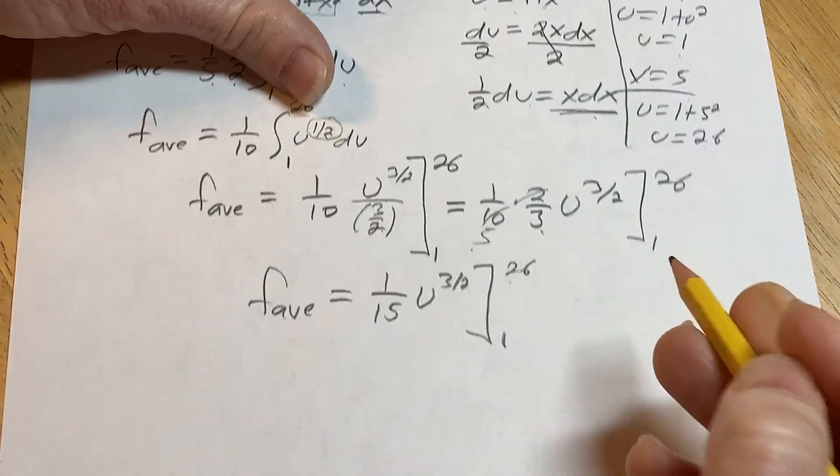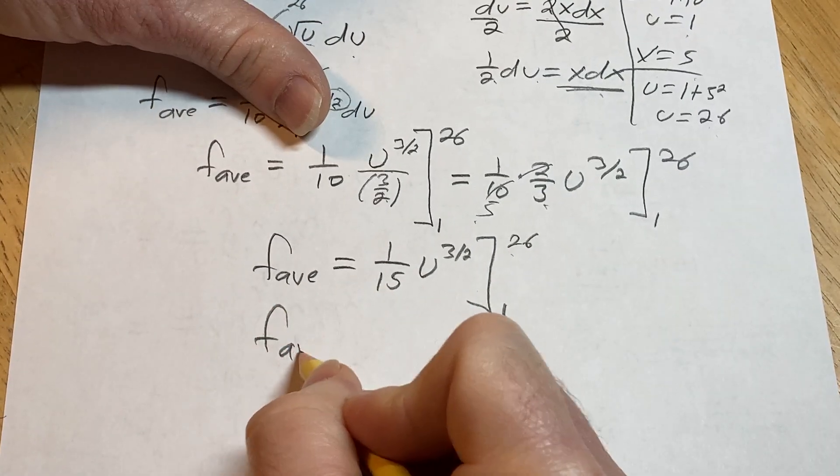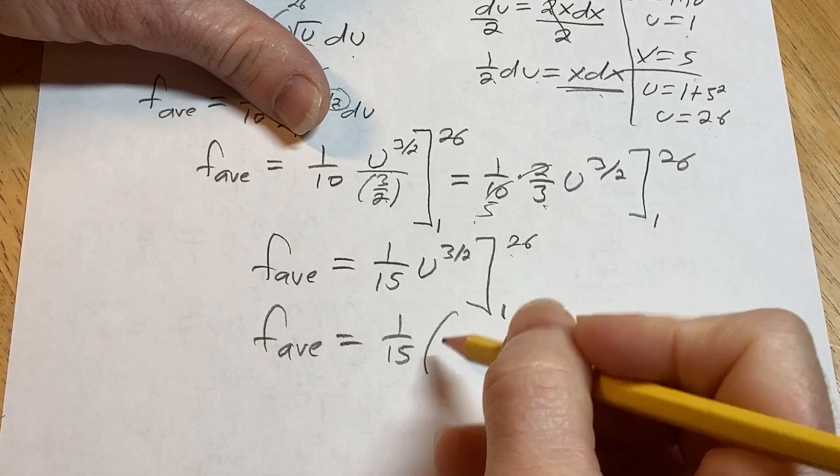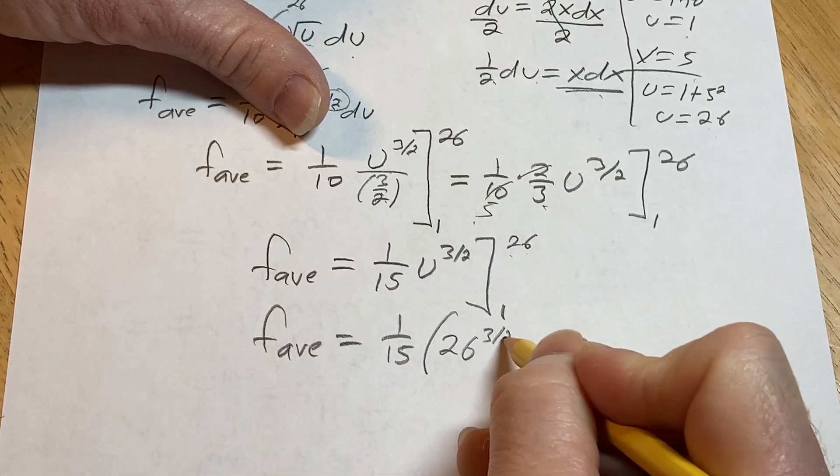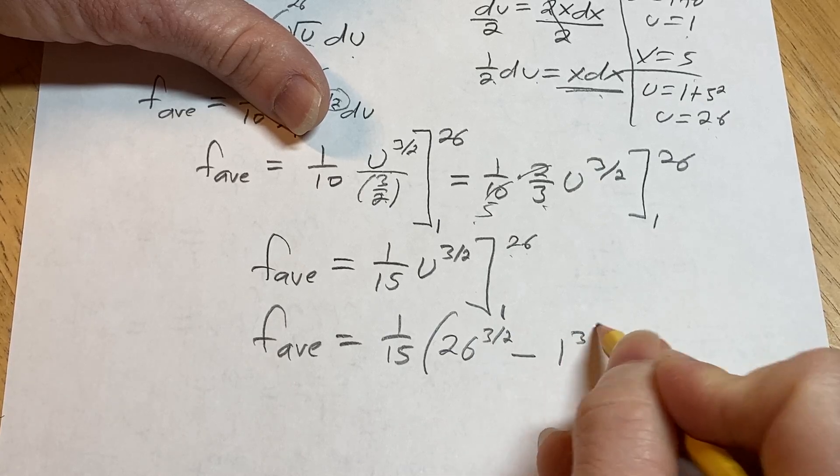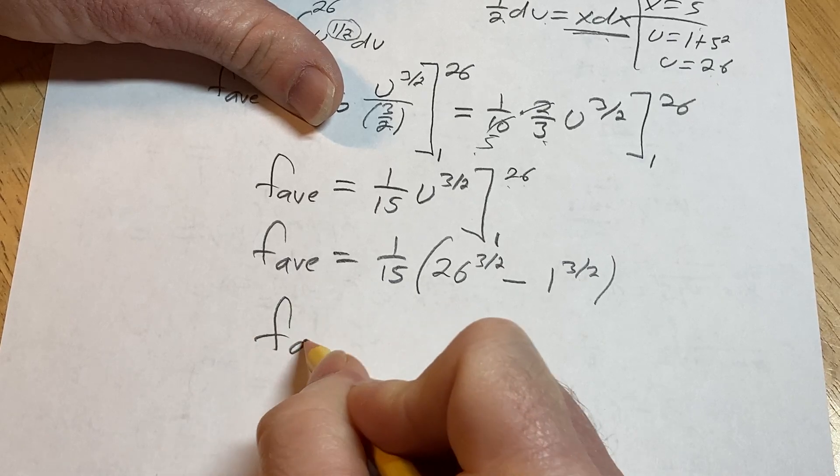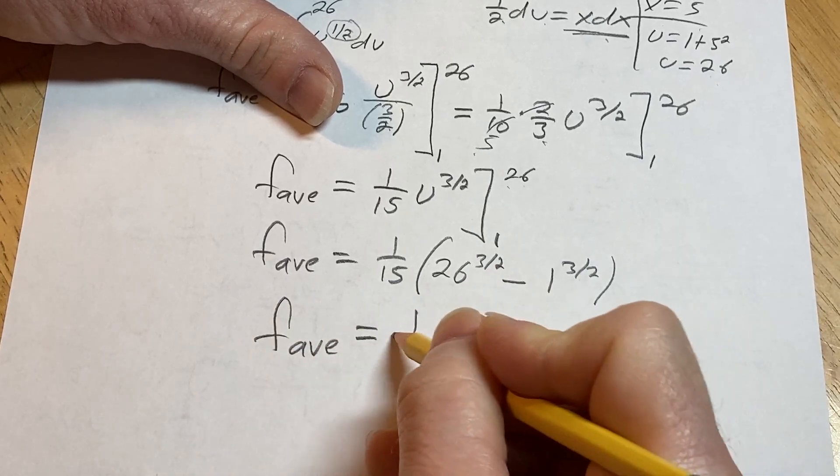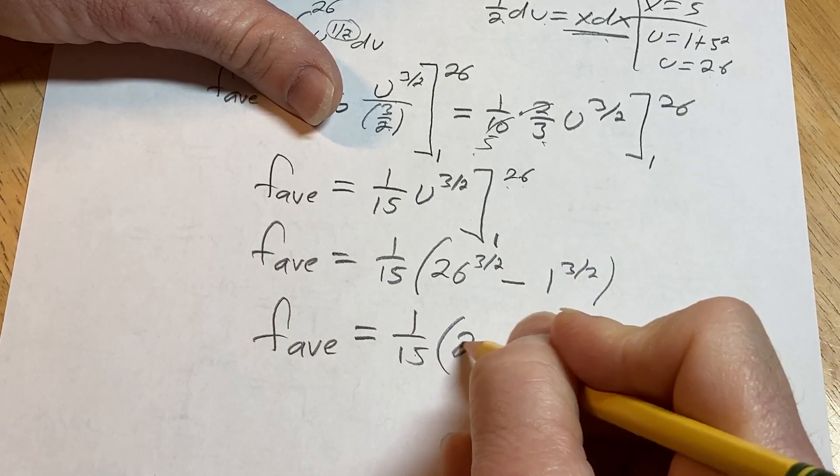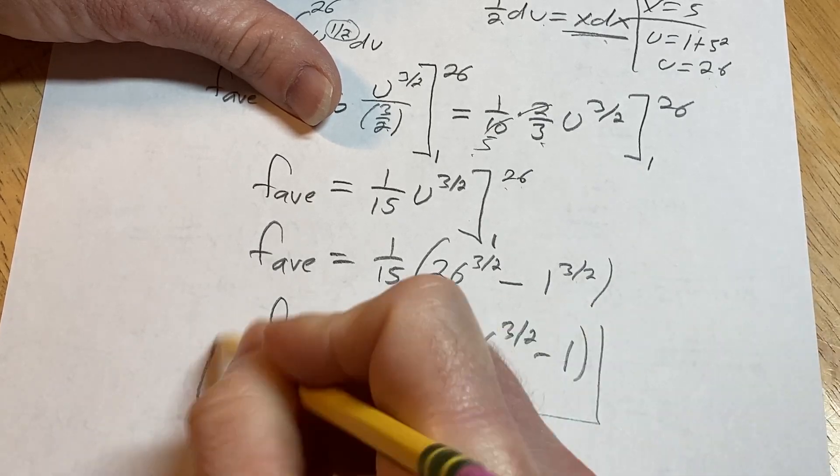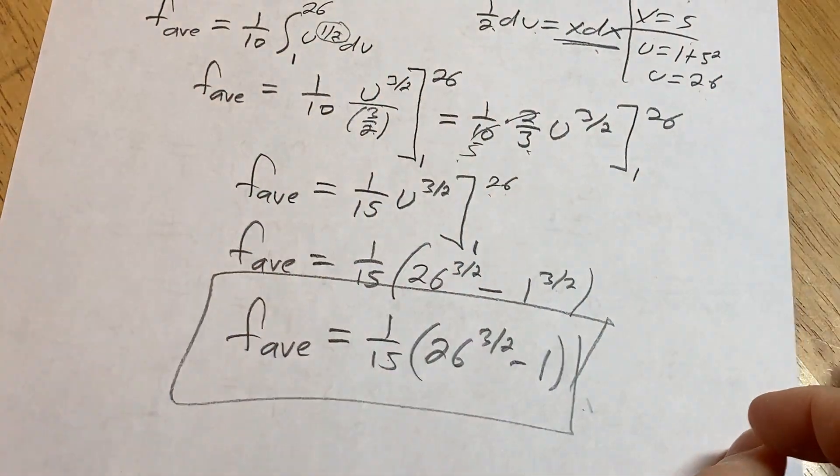As always, we plug in the top number first, right? So the average value of our function is 1 fifteenth. Parentheses, plug in the 26, you get 26 to the 3 halves minus 1 to the 3 halves. 1 to the 3 halves is 1, so we have the average value of our function is equal to 1 fifteenth. 26 to the 3 halves minus 1. Boom! That is the average value of our function in this problem.